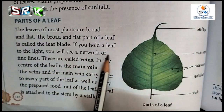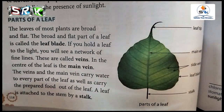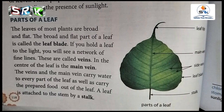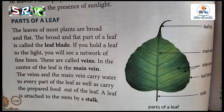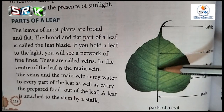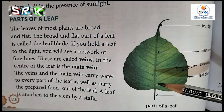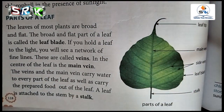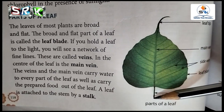If you hold a leaf to the light, you will see a network of fine lines. The center line is called the main vein. These are the main veins.